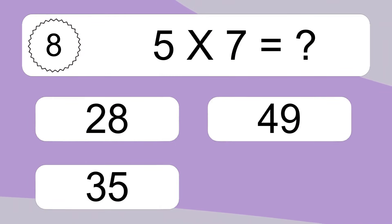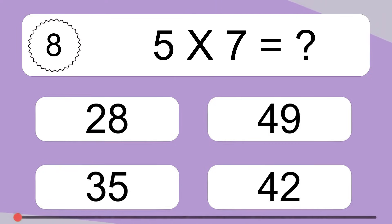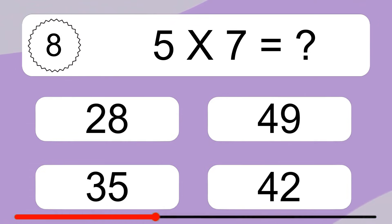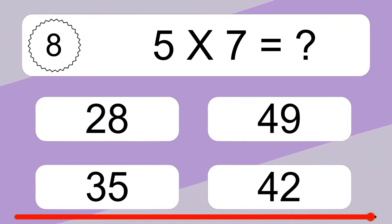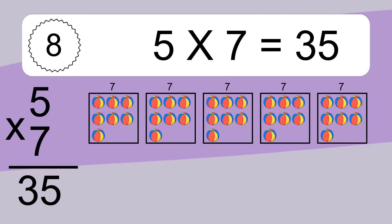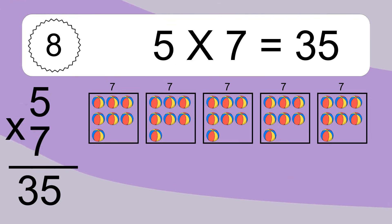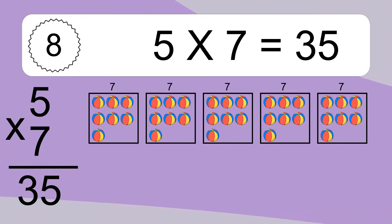5 times 7 equals what? 5 times 7 equals 35. We have 5 boxes, and each box has 7 colorful balls inside. If you count all the balls in all the boxes together, you will have 5 times 7 balls. This equals 35 balls.